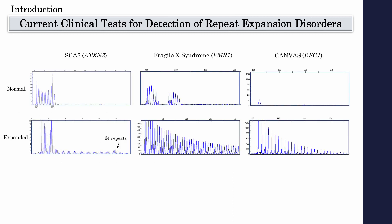Common clinical practice today would be to refer a patient to a specific single-gene repeat-primed PCR due to a clinical suspicion. We can see here three different individuals that were tested positive using this method for SCA type 3, fragile X syndrome, and CANVAS. The major drawback of this approach is that there are multiple diseases of pathological expansions with overlapping clinical presentation, and so individuals are subjected to one test after the other if they test negative.